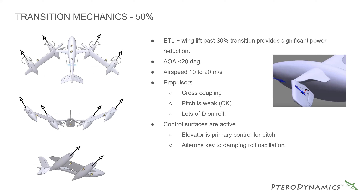At 50%, you can fly around just fine — it's more like flying a plane. You've got some forward speed, angle of attack is coming up, and wings are still effective. There's some cross-coupling in the propulsors which makes control a little more interesting. You're starting to get a bit weaker in pitch but the control surfaces — the V-tail — are becoming more active, helping out there. One thing we notice is it really helps to have very active ailerons at this point, even more active than on the wing, with lots of D-term. That's why we want to dive into the transition and tune each point with separate P, I, and D to get the most out of the configuration.